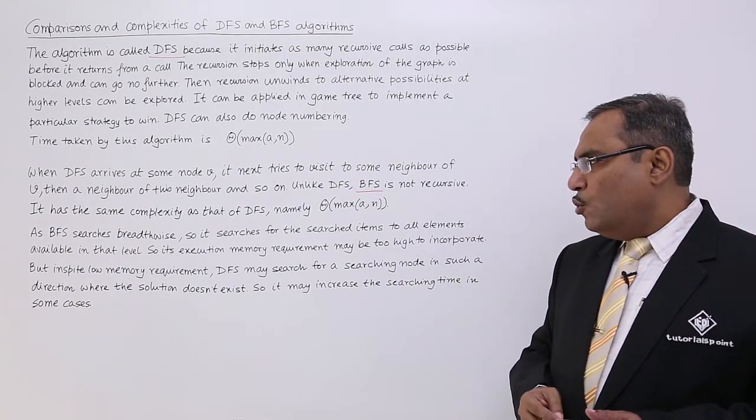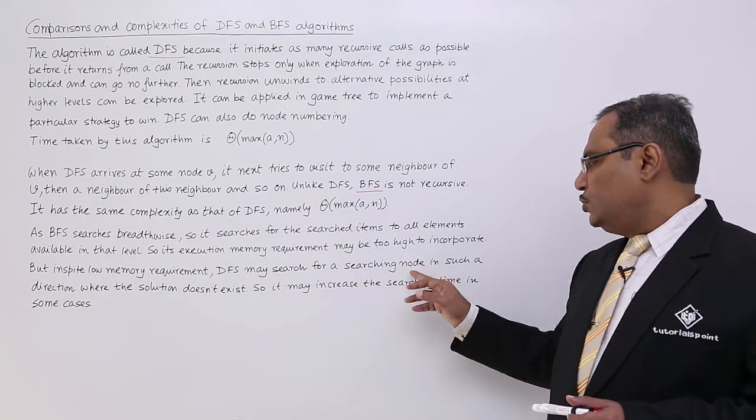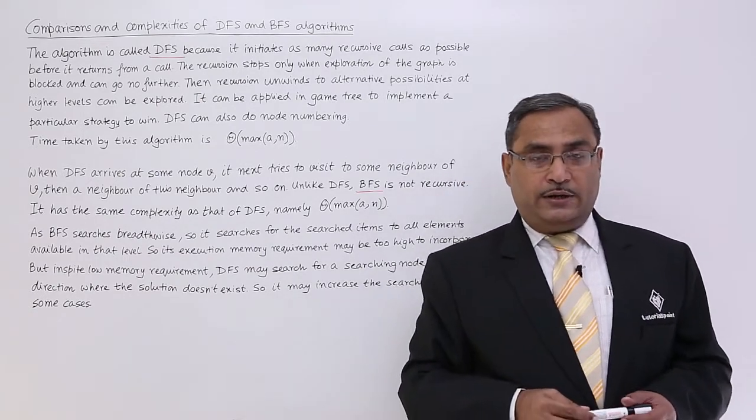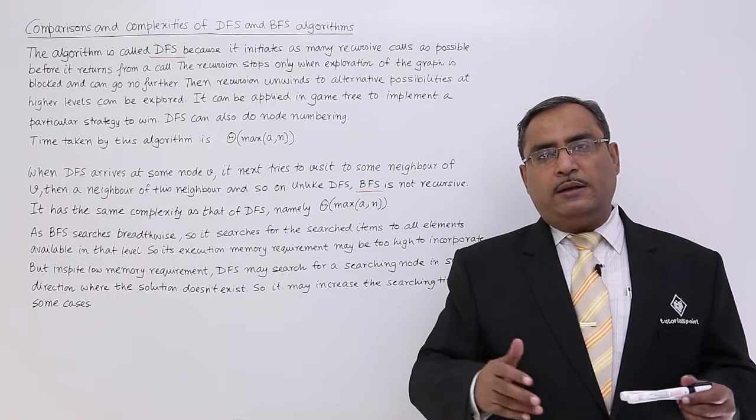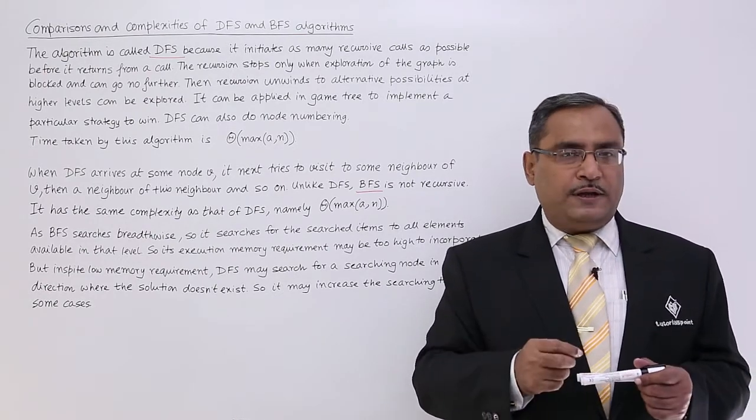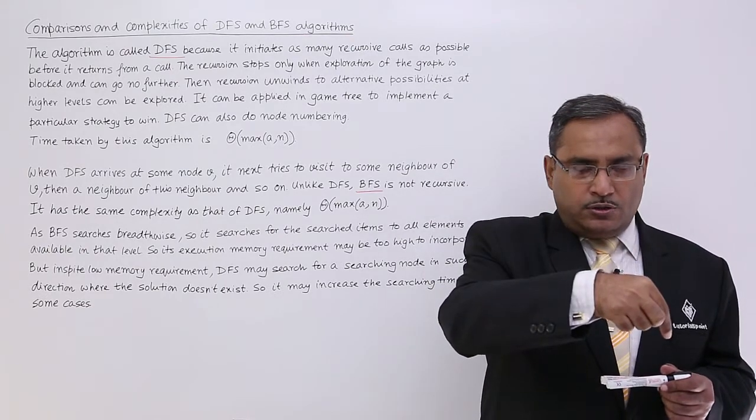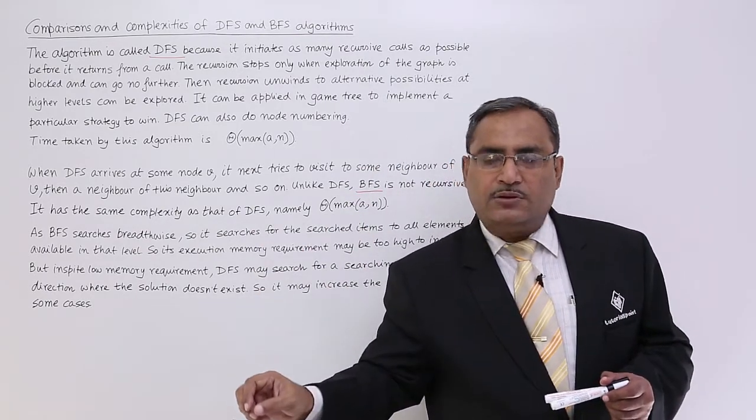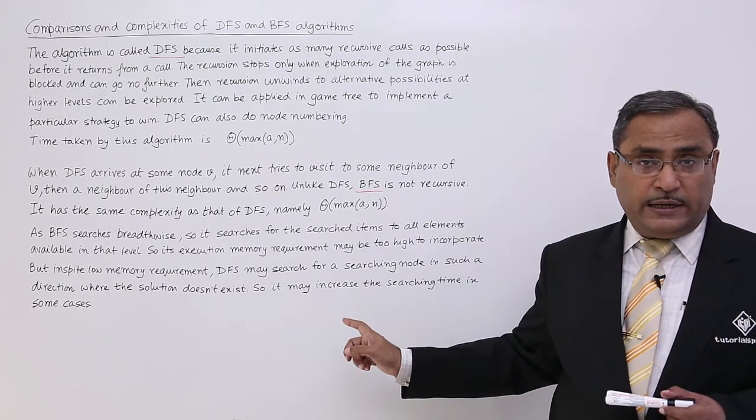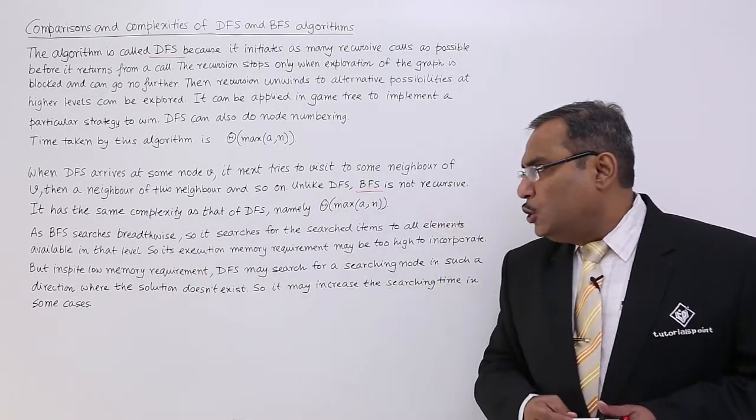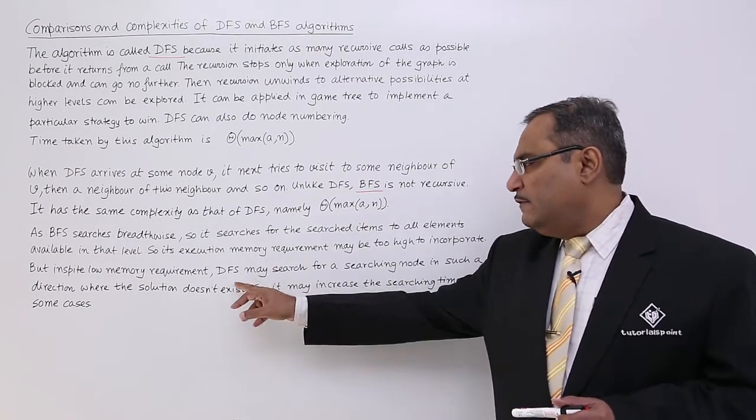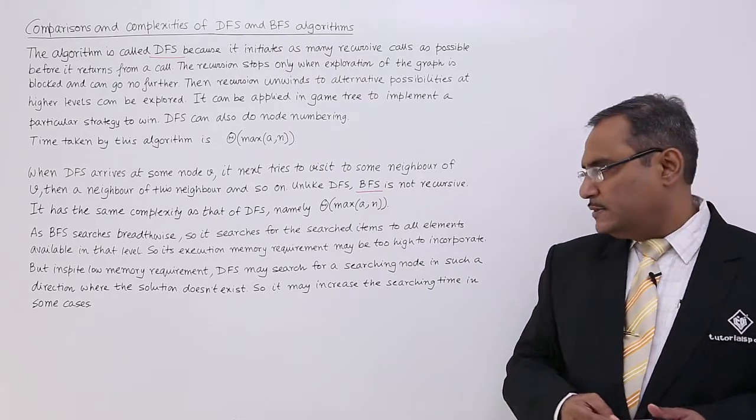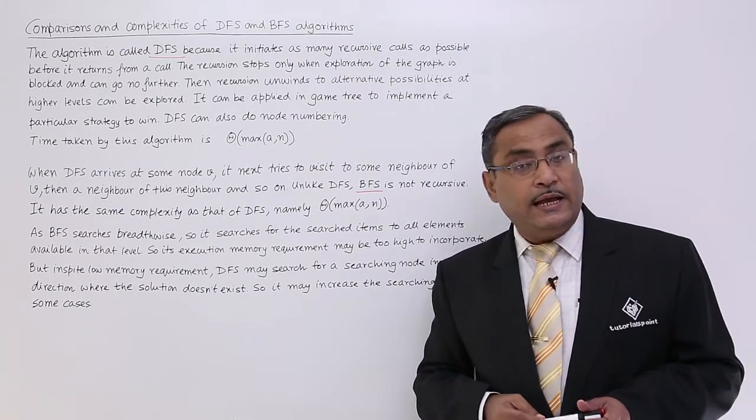But in spite of low memory requirement, DFS may search for a searching node in such a direction where the solution does not exist. In case of BFS, the runtime storage requirement, the memory requirement is too high. But in case of DFS, it may go to a certain depth to search a particular node where the node does not exist. It is existing with some other neighbors or adjacent nodes. That is the main disadvantage of this DFS. DFS may search for a searching node in such a direction where the solution does not exist. It may increase the searching time complexities in certain cases.